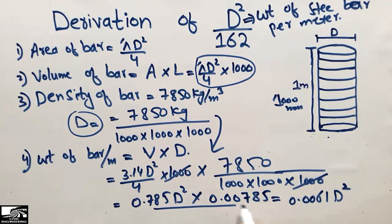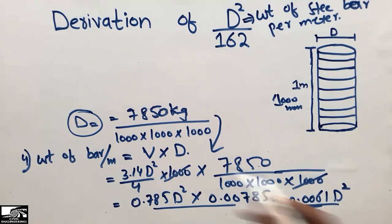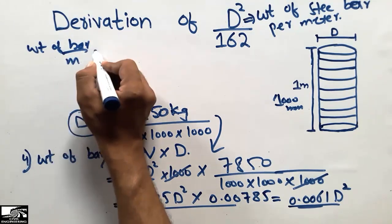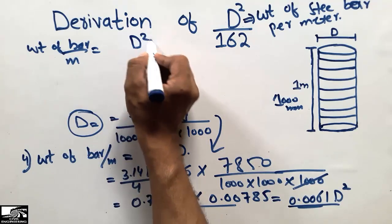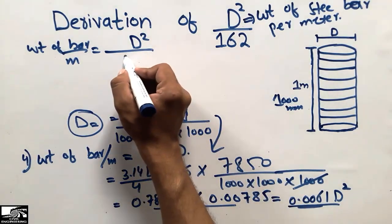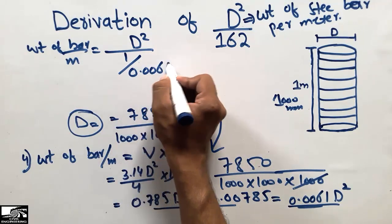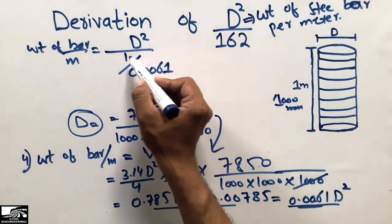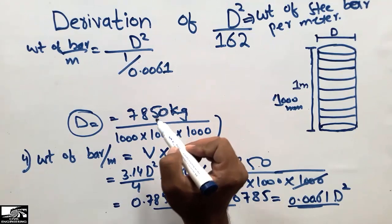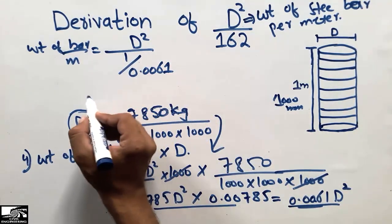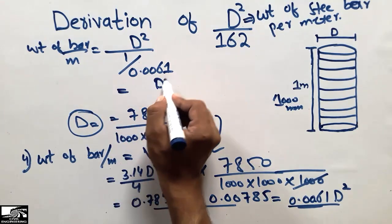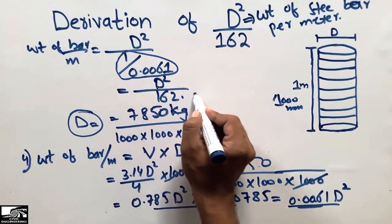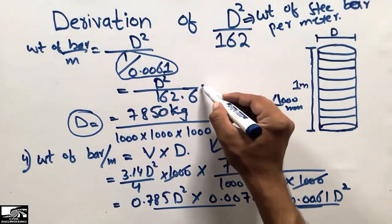So the weight of the bar per meter equals 0.00617 D². Now, moving this decimal value into the denominator — by the rule of mathematics, when shifting a value to the denominator it becomes 1 divided by 0.00617. Dividing this on a calculator gives approximately 162.6. So the result is D²/162.